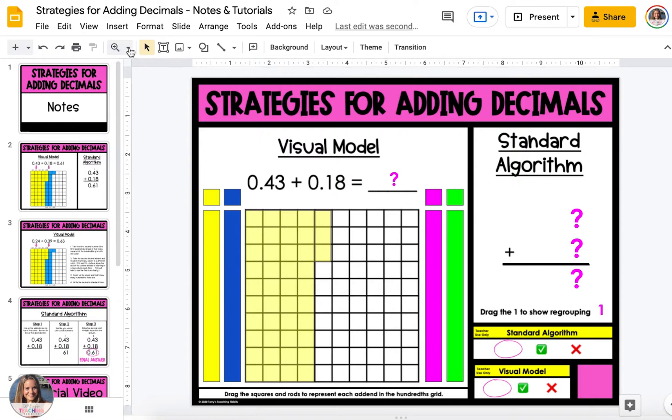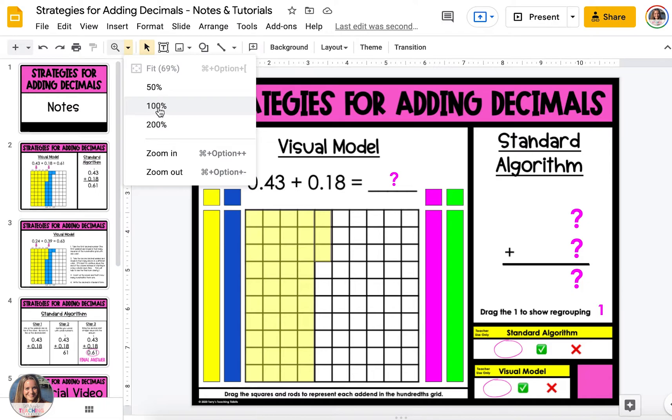To do this, simply go up to the toolbar, go to the magnifying glass, click on the downward arrow, and you can zoom in to 100% or 200%.